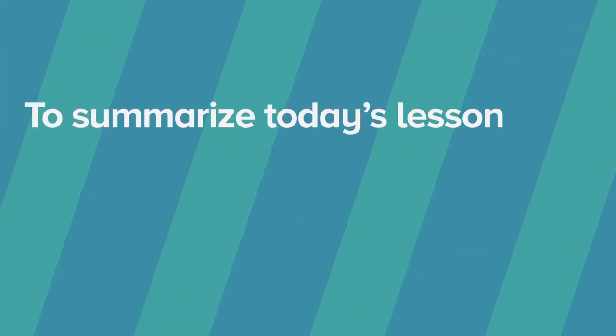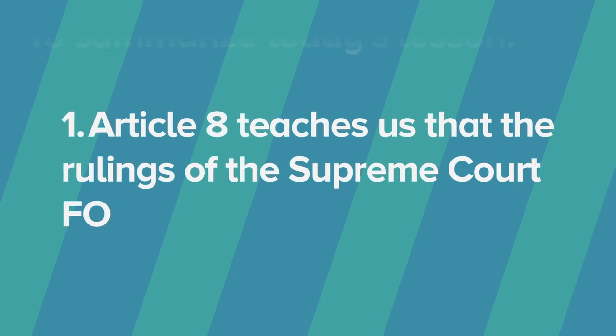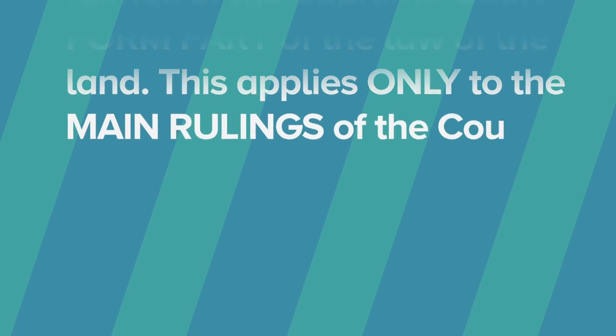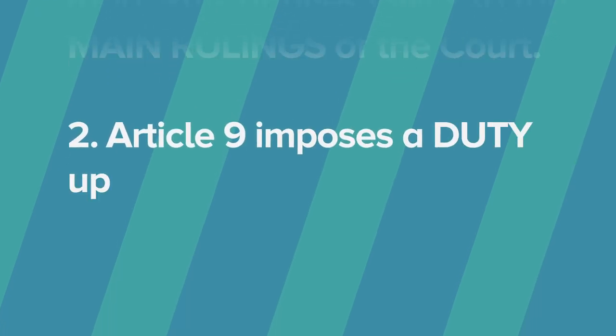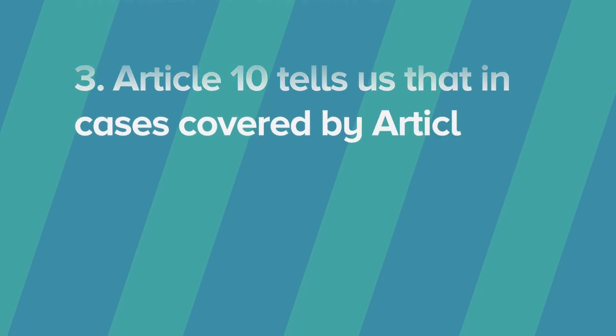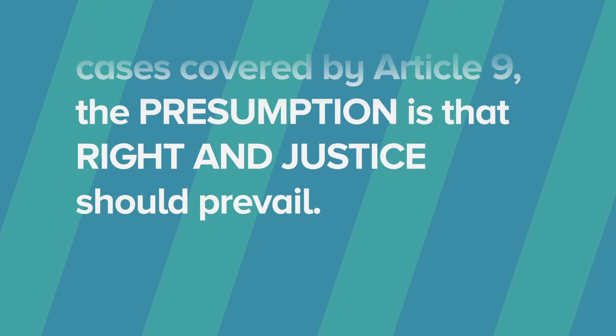To summarize today's lesson, Article 8 teaches us that the rulings of the Supreme Court form part of the law of the land. This applies only to the main rulings of the court. Article 9 imposes a duty upon judges to decide cases even when the law is silent, unclear, or obscure. Article 10 tells us that in cases covered by Article 9, the presumption is that right and justice should prevail.